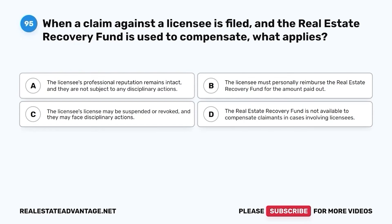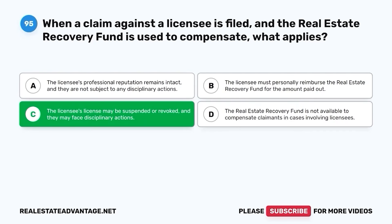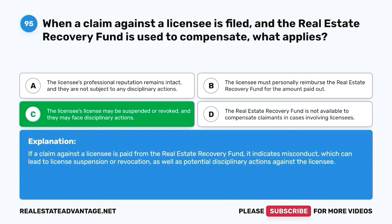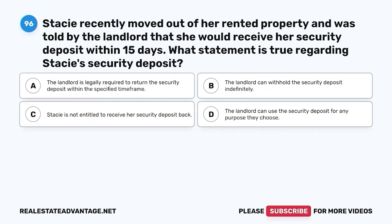Question 95. When a claim against a licensee is filed and the real estate recovery fund is used to compensate, what applies? A. The licensee's professional reputation remains intact and they are not subject to any disciplinary actions. B. The licensee must personally reimburse the real estate recovery fund for the amount paid out. C. The licensee's license may be suspended or revoked and they may face disciplinary actions. D. The real estate recovery fund is not available to compensate claimants in cases involving licensees. The correct answer is C. If a claim against a licensee is paid from the real estate recovery fund, it indicates misconduct, which can lead to license suspension or revocation as well as potential disciplinary actions against the licensee.